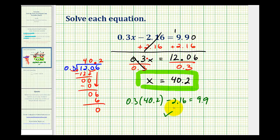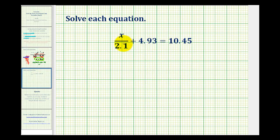Let's go ahead and take a look at a second example. Here, we have x divided by 2.1 plus 4.93 equals 10.45. So, again, our goal is to isolate the variable. So, we want to manipulate the equation so it's in the form of x equals some number. The first step is to undo the addition of 4.93. So, we'll subtract 4.93 on both sides of the equation. Again, making sure we line up the corresponding place values and the decimal point.